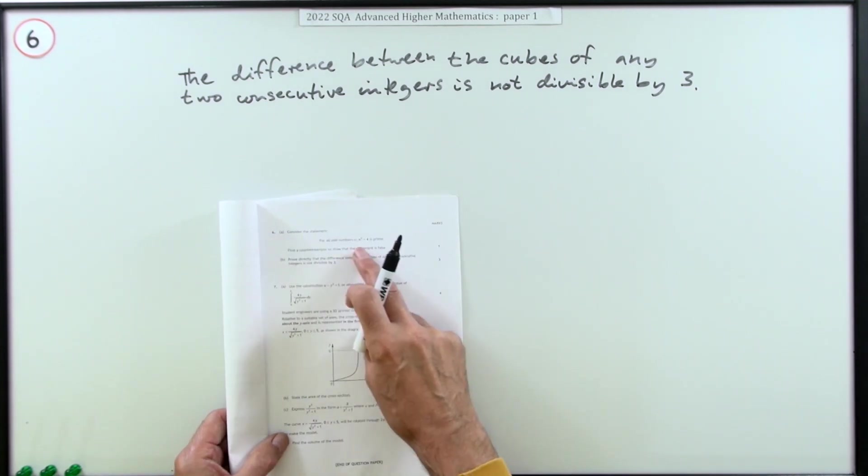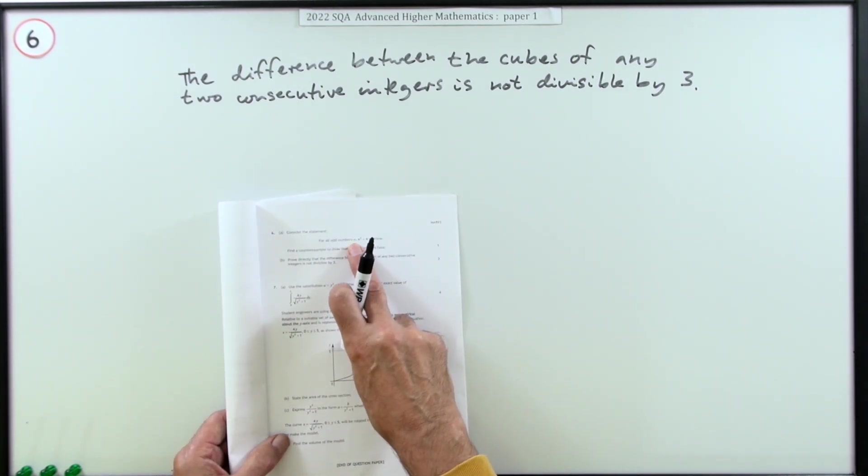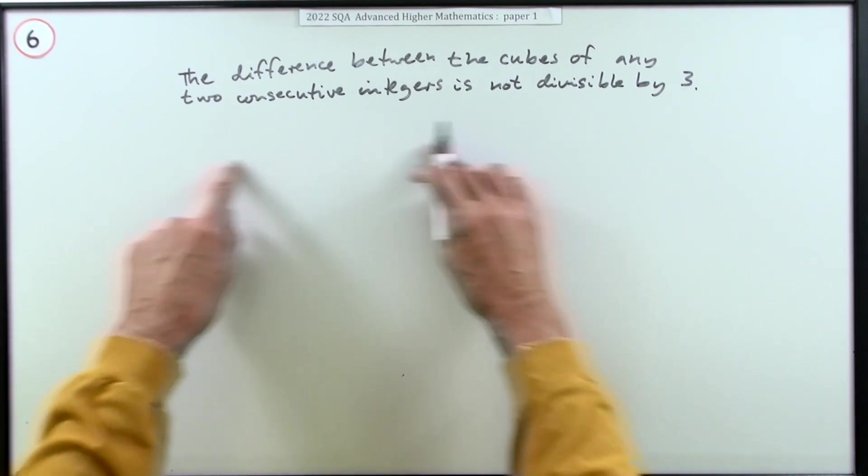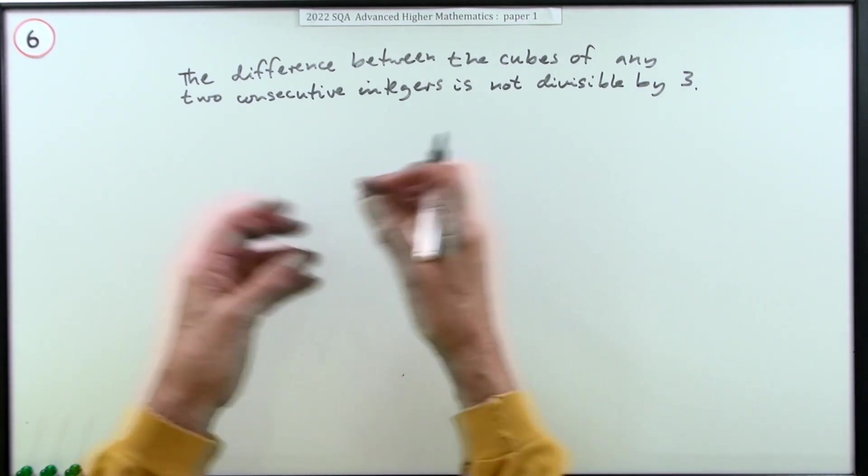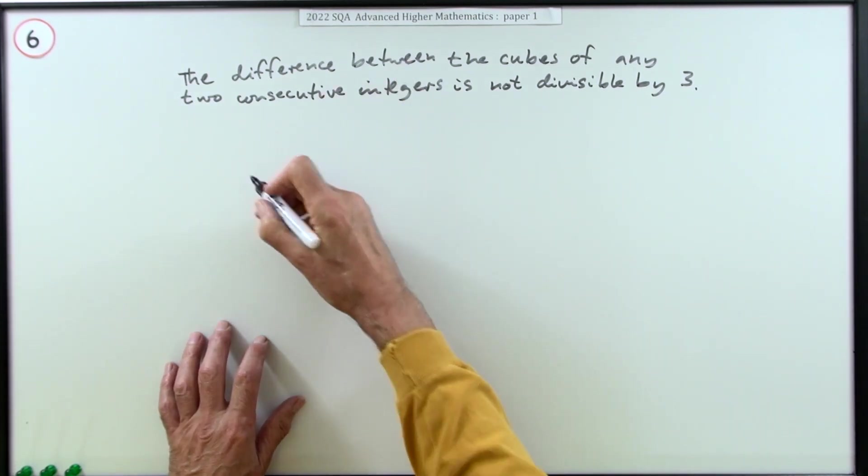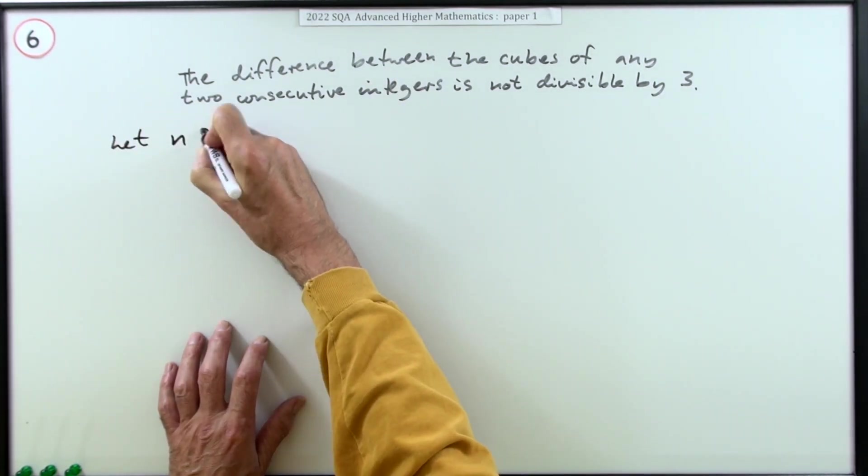In part A it introduced the variable n. Here it's not introduced any variables, so you'll have to introduce that yourself. That will have to be your first statement. Let n be a member of Z, the set of integers, so that n and n plus one are consecutive.